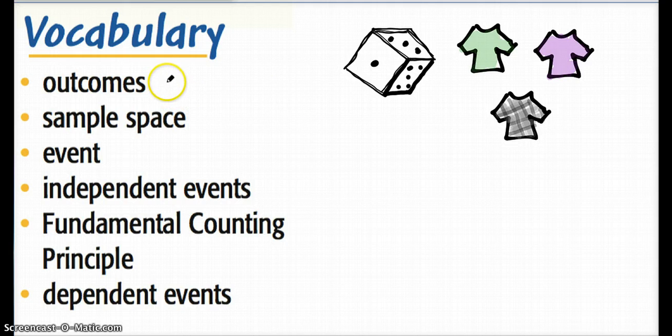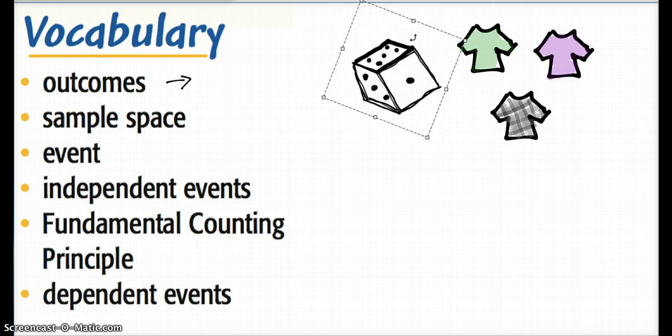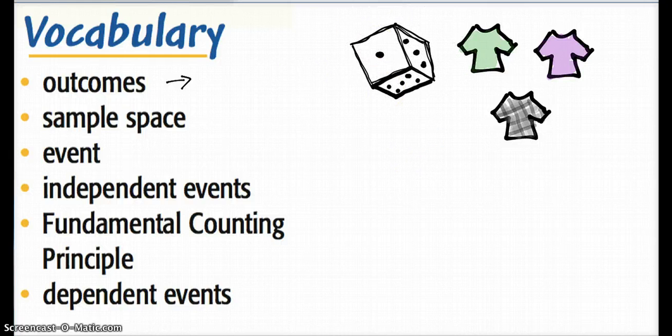So outcomes. Outcome is what happens after a single trial, a single event. So let's say I were to take this die and roll it around. Let me get my animation working. And then one of the possible outcomes that could happen, we know that there's six outcomes if I roll a six-sided die. One of the possible outcomes is that I get a one, a two, or three, or four, or five, or six, right? So there's six possible outcomes.